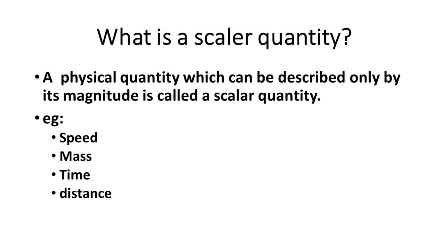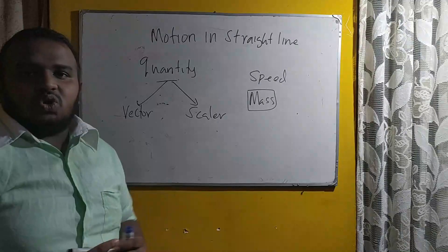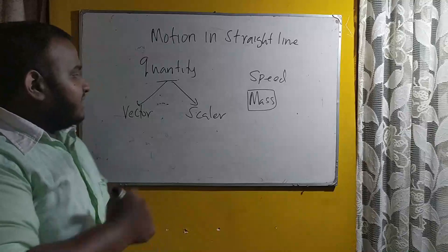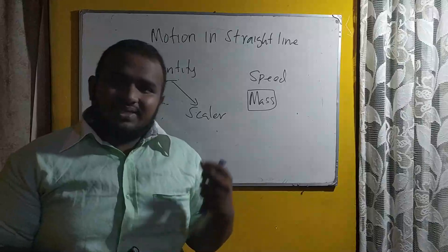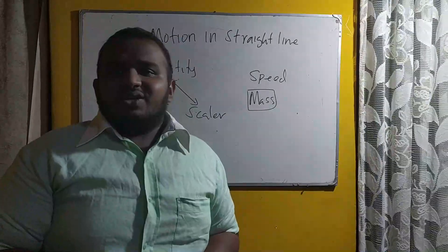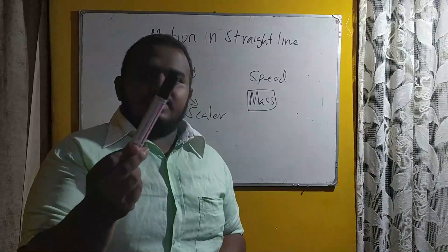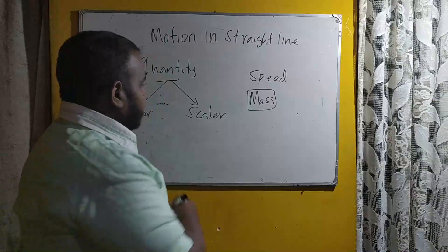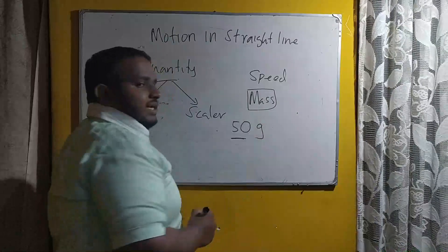Let's consider mass as an example. The definition says only magnitude is sufficient to describe the quantity. If there is an object and I ask you what is the amount of it, you can answer in mass. For example, if I ask you what is the mass of this pen and you say it is 50 grams, that magnitude — 50 grams — is sufficient to define it.